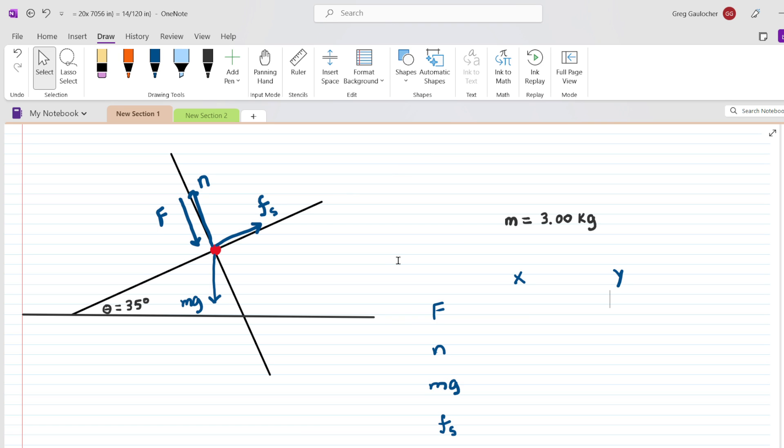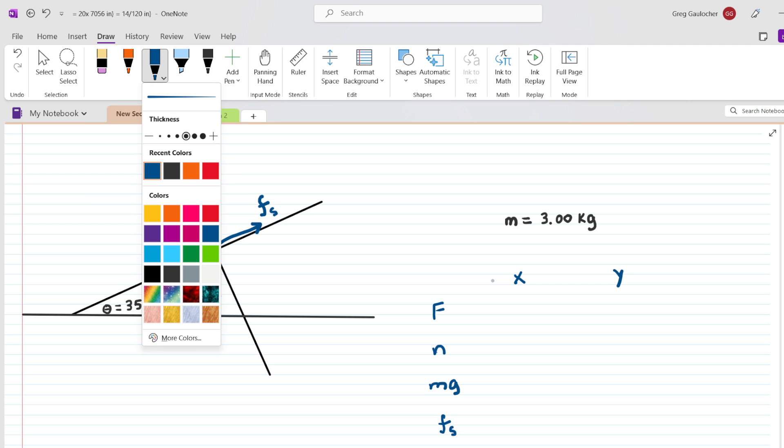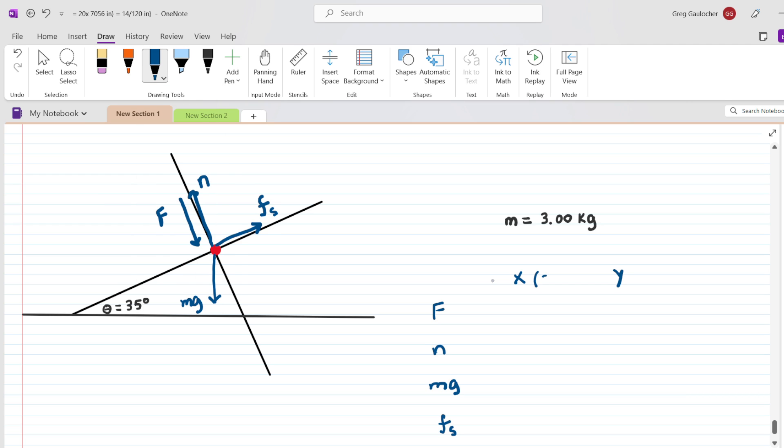This table is going to organize the four forces along the left column, and then we're going to break those forces into their X and Y components. Now, you have probably learned that in order to find an X component, you're going to multiply the force by the cosine of a particular angle. We'll talk about that angle in just a moment. And for the Y component, you'll multiply by the sine of that same angle. The key is to figure out the appropriate angle.